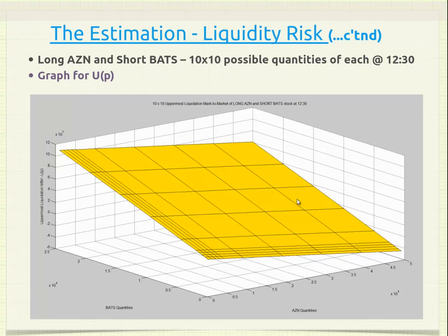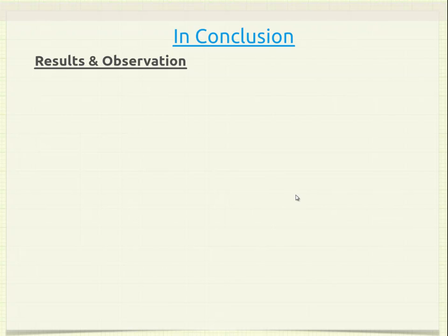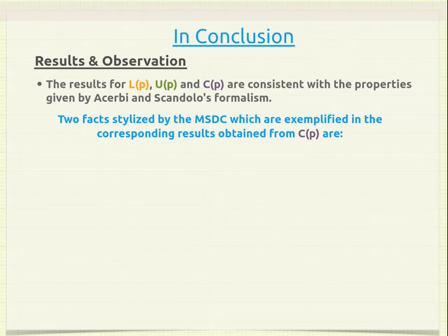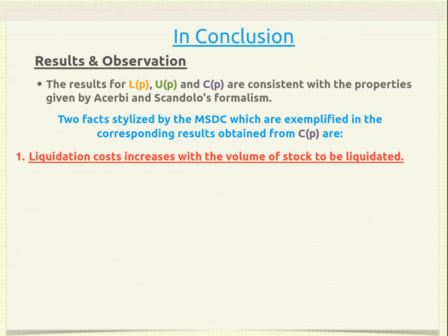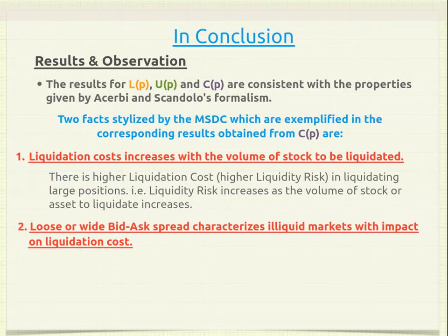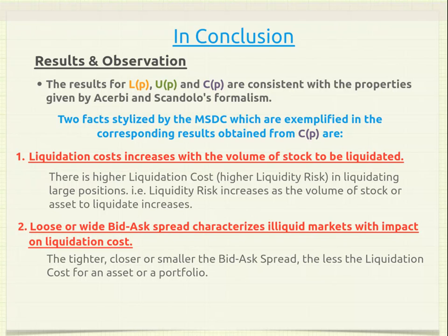Overall, we conclude that the results for L, U, and C are consistent with the properties given by Acerbi-Scandolo's formalism. Two key stylized facts from the MSDC are exemplified in the results for C. First, liquidation cost increases with the volume of stock to be liquidated — there is higher liquidity risk in liquidating large positions. Second, a looser or wider bid-ask spread characterizes illiquid markets with higher liquidation cost; conversely, the tighter the bid-ask spread, the less the liquidation cost.